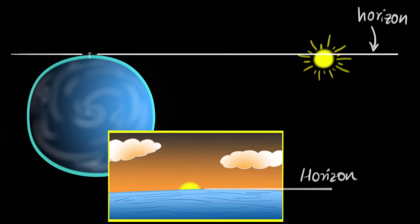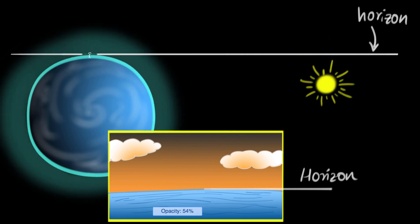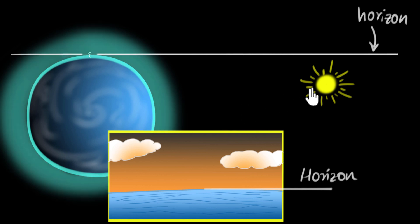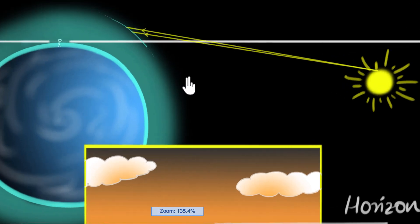Now so far, we didn't talk about the atmosphere of the earth. So let's bring the sun back below the horizon, and let's say here is our atmosphere. And let's again draw a couple of rays of light from the top of the sun. Let's zoom in and look at this.